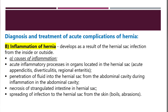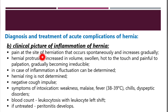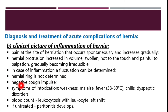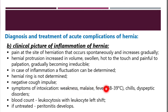Clinical picture of hernia inflammation includes pain at the site of herniation occurring and increasing gradually, increase in volume of the hernia protrusion which becomes swollen, hard to touch, and painful to palpation, gradually becoming irreducible. Fluctuation can be determined, the hernia ring is not defined, and there is a negative cough impulse. Symptoms of intoxication include weakness, malaise, fever of 38 to 39 degrees Celsius, chills, and dyspeptic disorders.